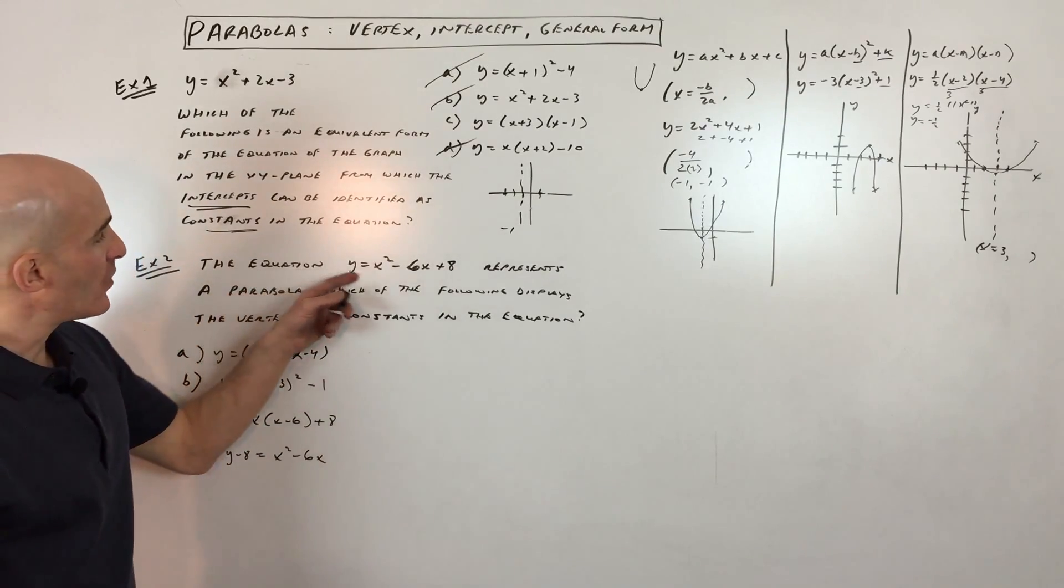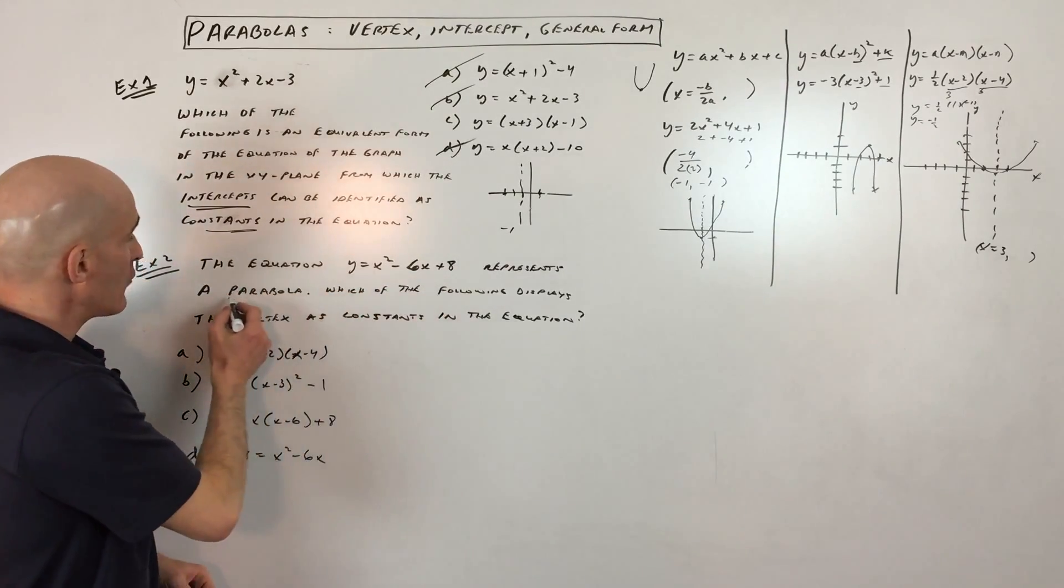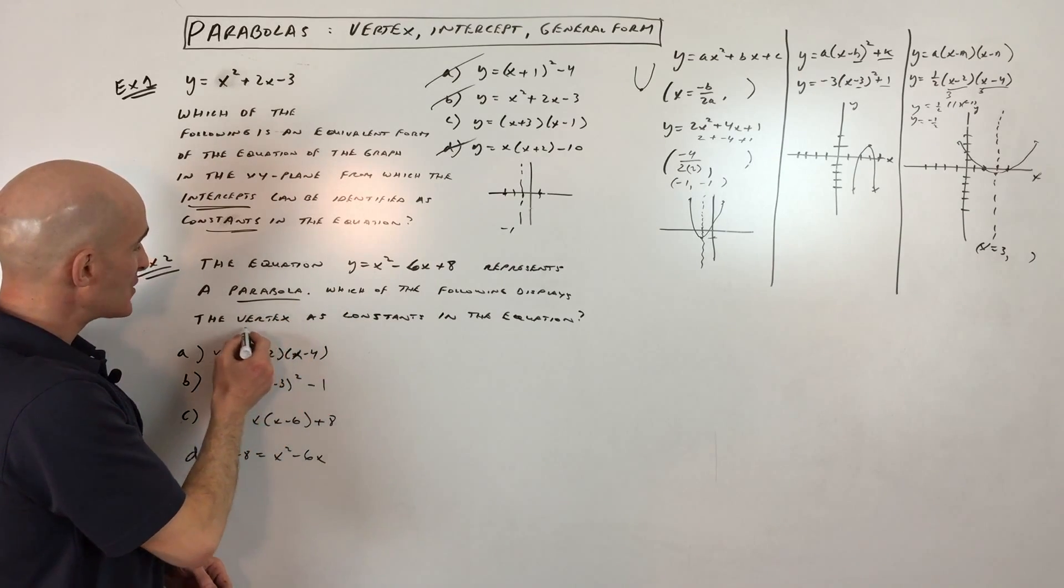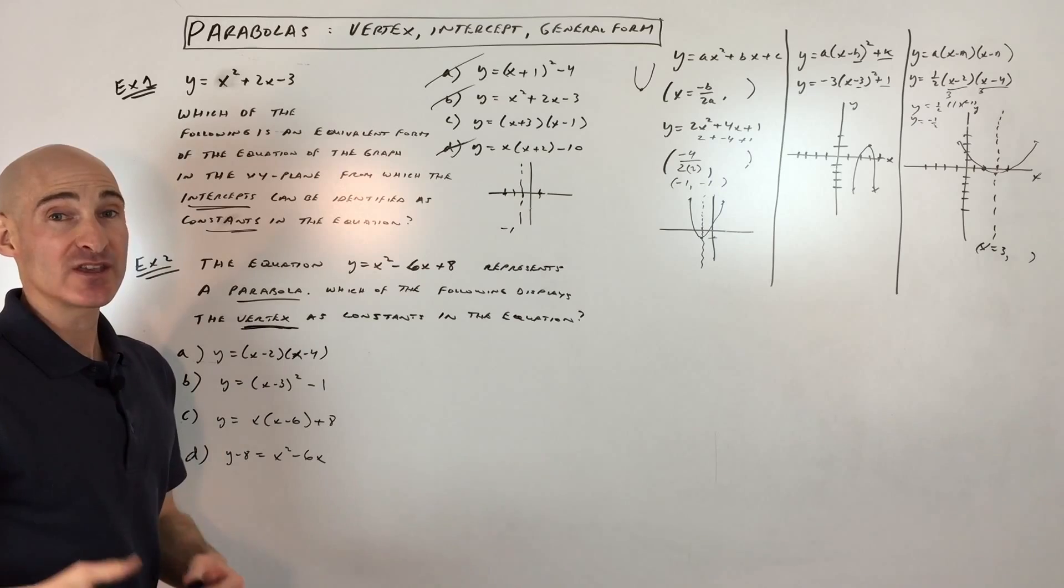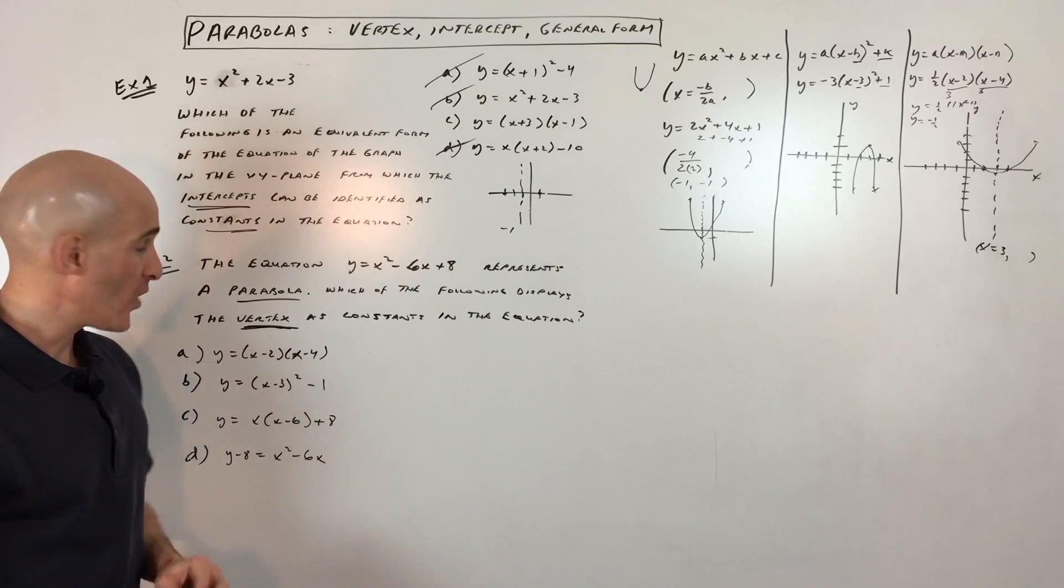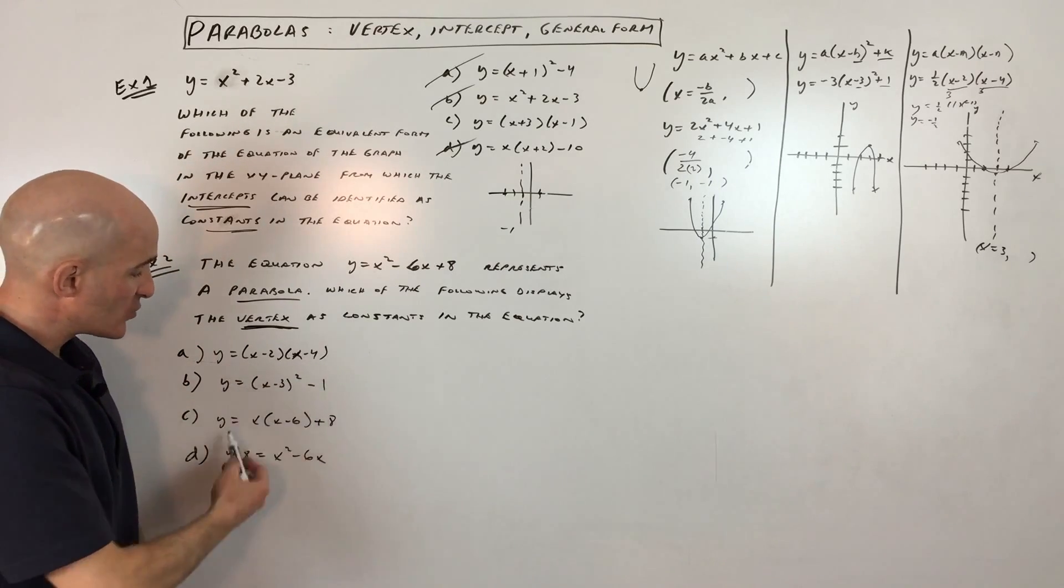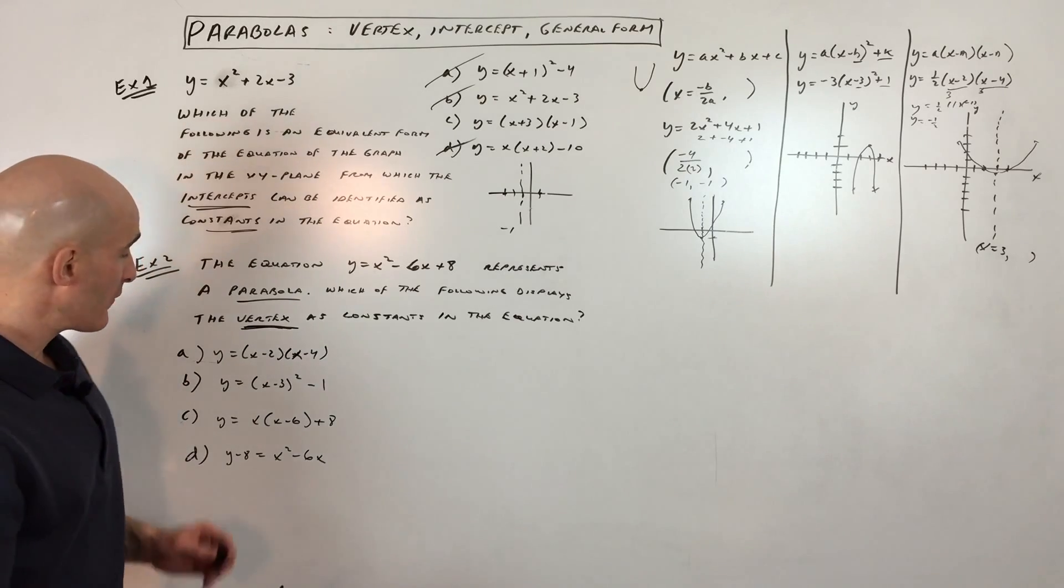Example 2, it says the equation y equals x squared minus 6x plus 8 represents a parabola, which of the following displays the vertex as constants in the equation. So go ahead and pause the video, see if you can do this one. They give us a few options, and which one do you think it would be?